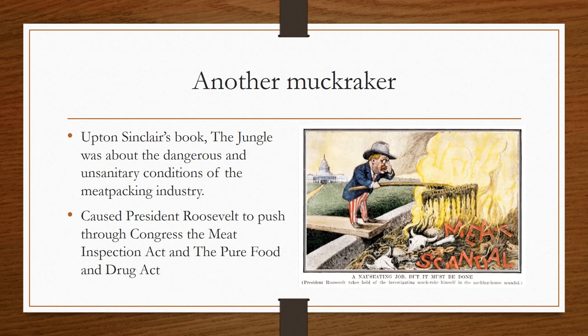Another muckraker mentioned last week was Upton Sinclair's book, The Jungle, which was about the dangerous and unsanitary conditions of the meatpacking industry. This book was very successful in prompting change because President Theodore Roosevelt, after learning about the contents of the book, pushed Congress to create the Meat Inspection Act and the Pure Food and Drug Act, which would regulate food companies and make sure that food was being processed in sanitary conditions.